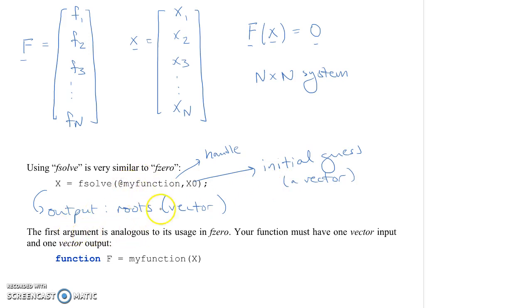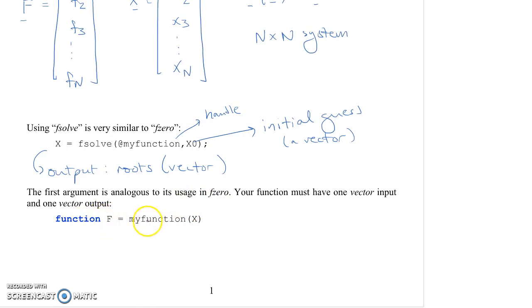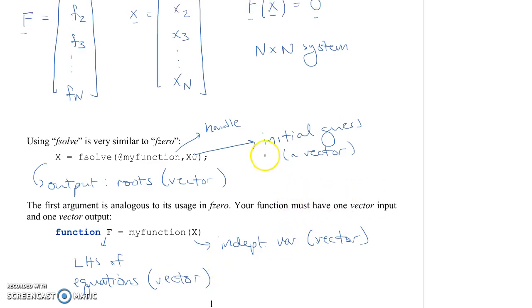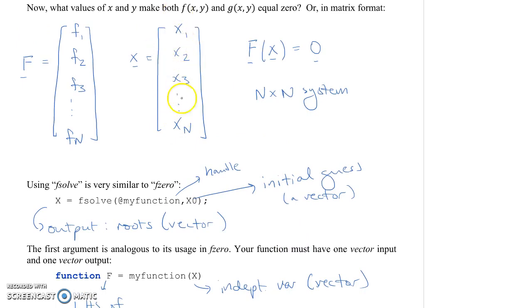Now, this first argument, this function handle, it's analogous to its usage in fzero. And this function handle will point to a function that you must have written. And this function has one vector input and one vector output. For example, this function F equals my function of X, where X is your independent variable, and it's a vector. And the output, capital F, is like the left-hand side of your equations. And that's also a vector. So you have n unknowns in a vector, and also n equations in that vector.